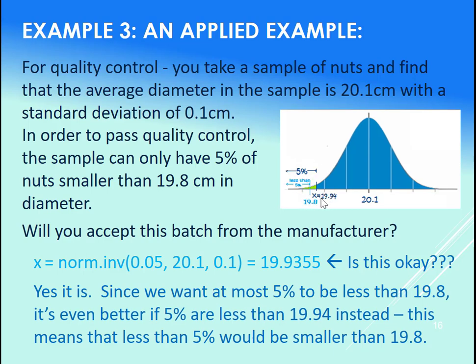So picture this. Our x value turns out to be 19.94 such that 5% is less than that. What that gives us is that less than 5% of the nuts will be less than 19.8 then. That is good. 19.8 is our cutoff for a defective nut that won't fit on our bolt. So since 19.94 is larger, that is good in this case.